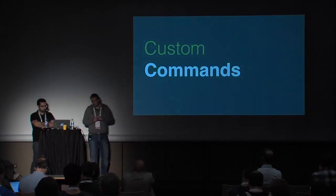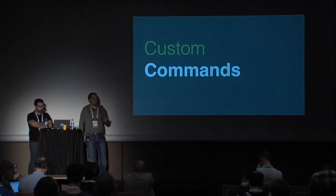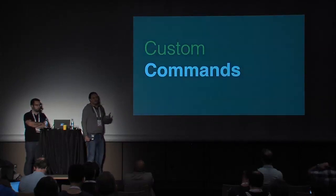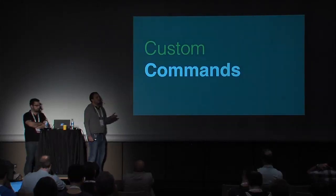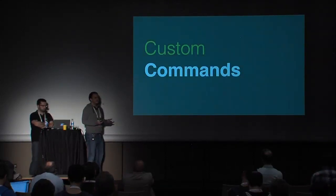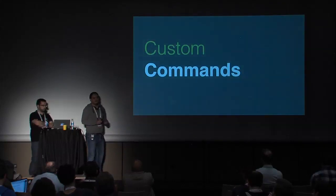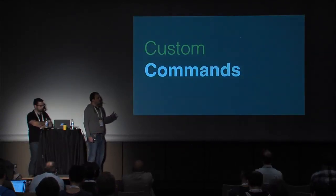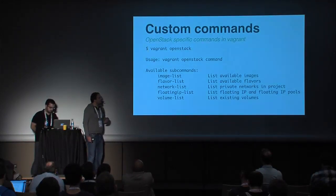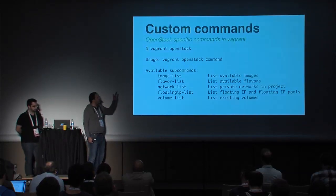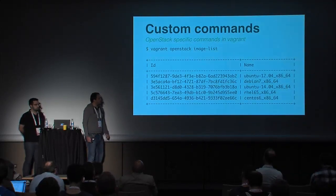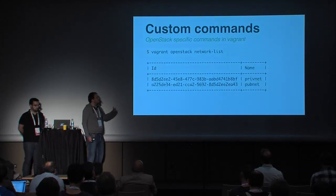To write a Vagrantfile, we need a lot of OpenStack information: flavor name, image name, networks, volumes, etc. Normally you'd have to query the OpenStack API or use the Horizon web console. When using Vagrant, we don't want to leave the tool to get that information. So we implemented a plugin that extends the Vagrant CLI, adding an 'openstack' command with subcommands. For example, you can type 'vagrant openstack image list' to get a list of images and pick the one you need. We have the same for all needed OpenStack objects like networks, and so on.